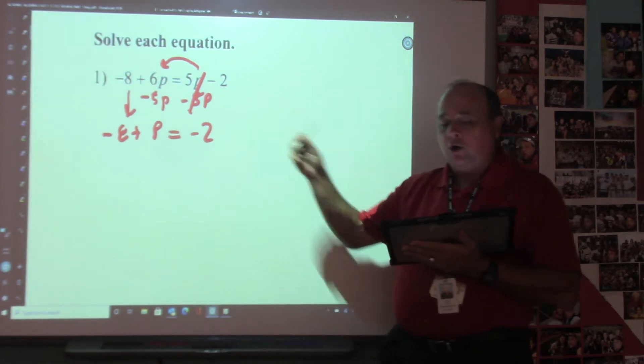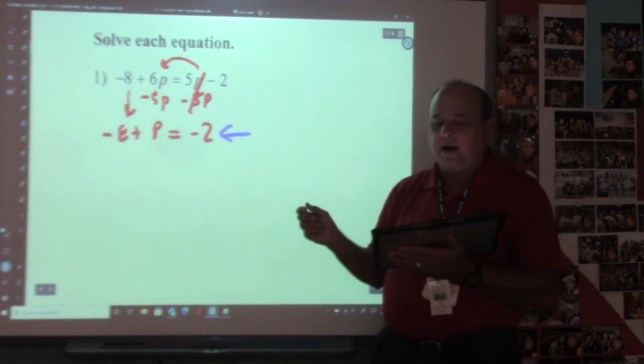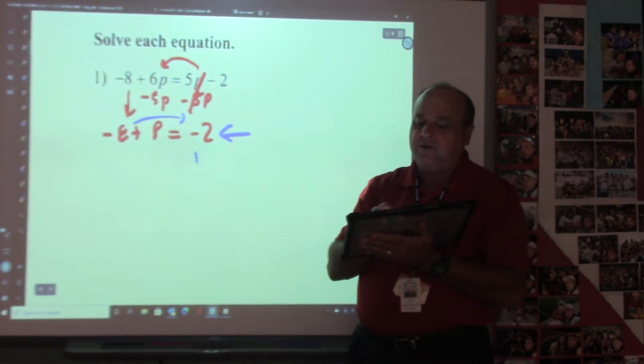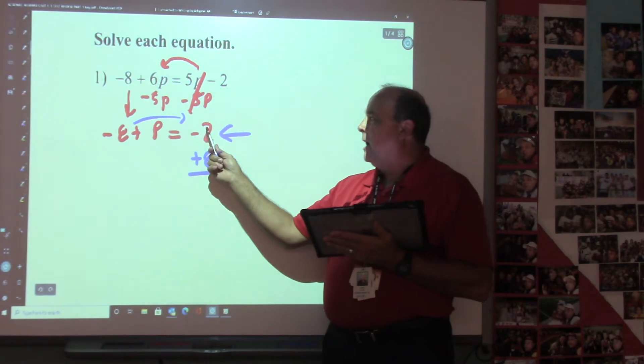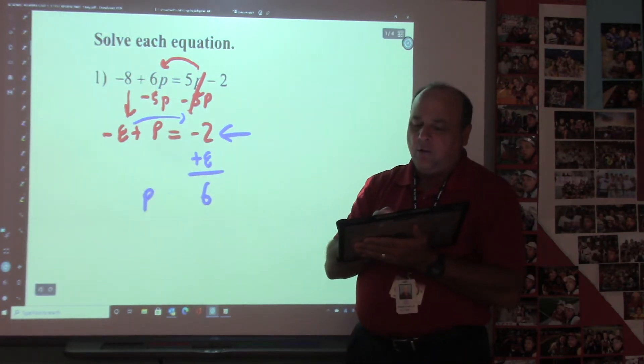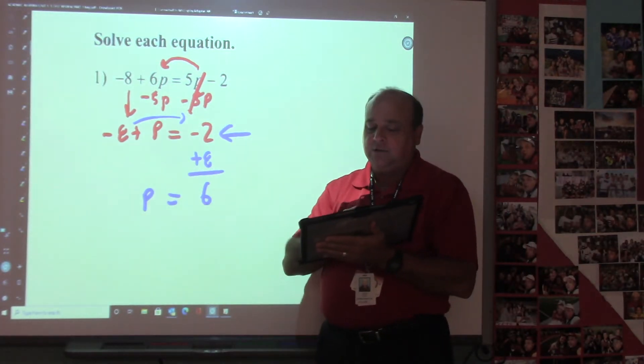Now then, this is where you get on your calculator. You're going to type this number in first on your calculator. What's the opposite of -8? You're going to move that across, it's +8. So on your calculator, you would punch -2 + 8, and you would get 6. Now then, on this problem, there's no number here, so you don't have to divide. So that's the answer.